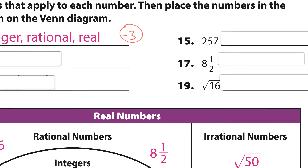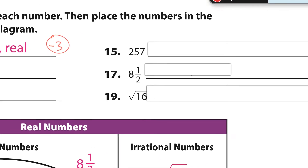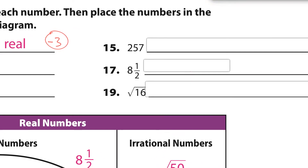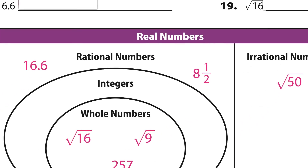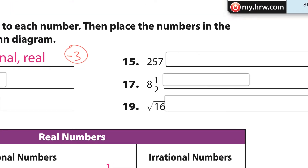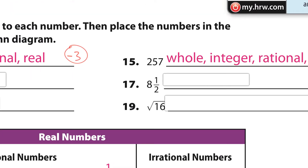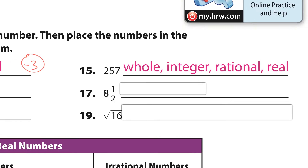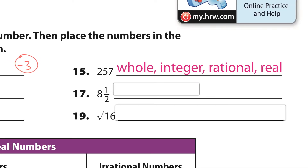Number 15: 257. It looks like 257 is a whole number. And if it's a whole number, it's whole, integer, rational, and real — all of them. Whole, integer, rational, and real.